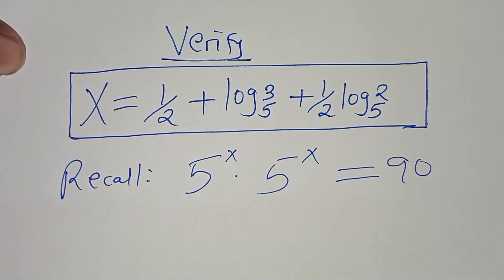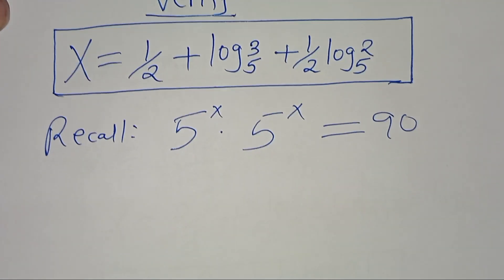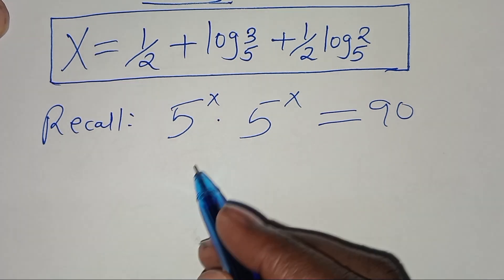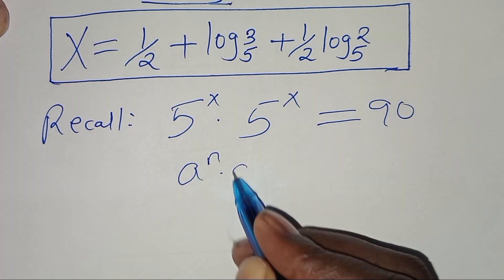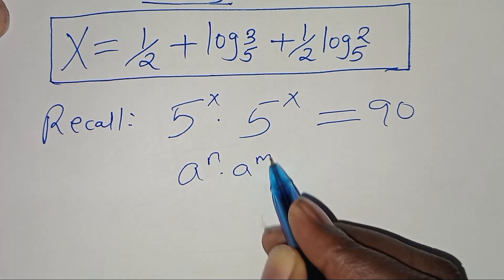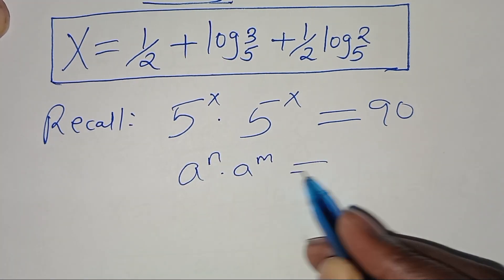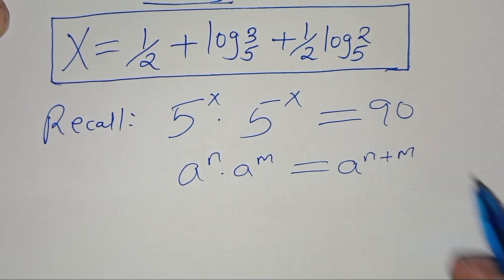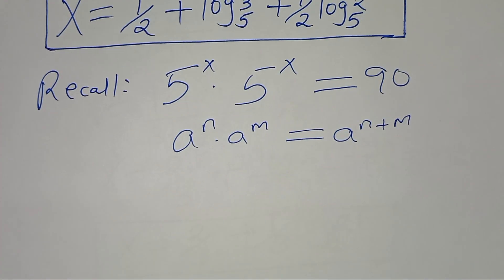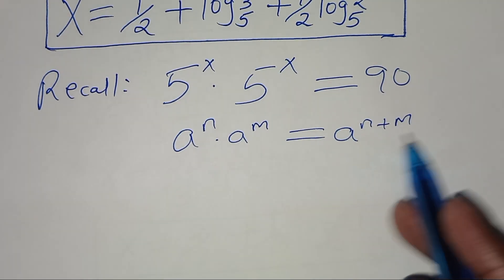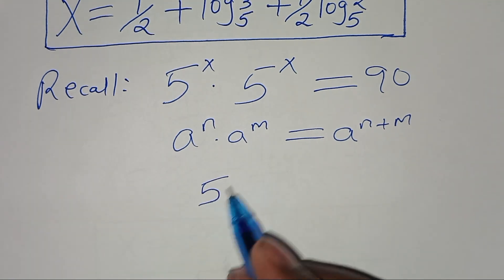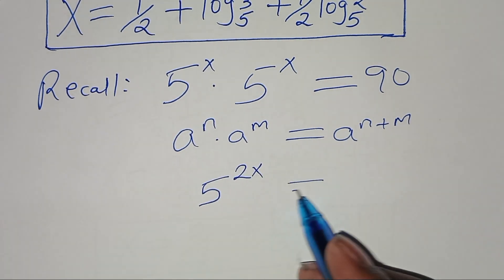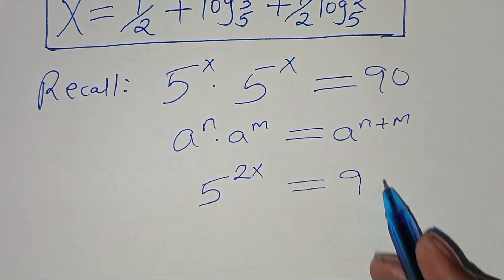Now, let's verify this. We have 5 to the power x times 5 to the power x, which is in the form of a to the power m times a to the power n, and we can express this as a to the power n plus m. Applying this exponent property, 5 to the power x plus x, which is 2x, gives us 90.